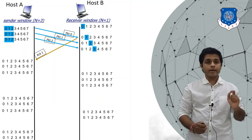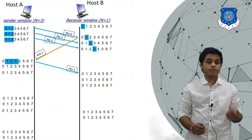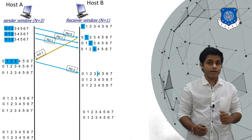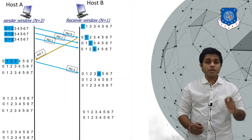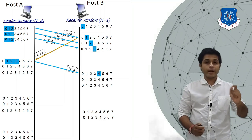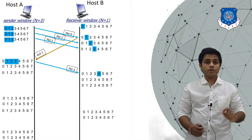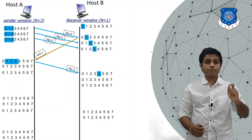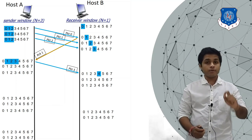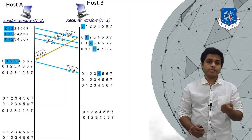When A receives acknowledgement one, it knows packet zero was received by B successfully, so the sender's window slides and A sends the next packet, which is packet three. B receives the packet it was expecting, so the receiver's window also slides to four. Now packets one, two, and three are in transmission — the sender's window is at positions one, two, three — and the receiver's window is at four, so B is expecting packet four next.